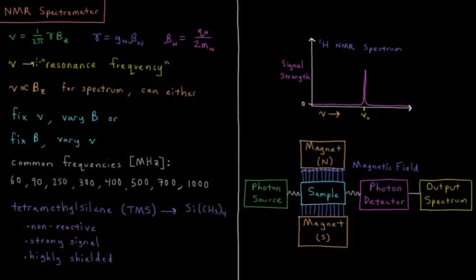So if we want to get a spectrum for a particular nucleus or particular set of nuclei we can do one of two things. We can either fix the frequency and vary the magnetic field, or we can fix the magnetic field and vary the frequency.